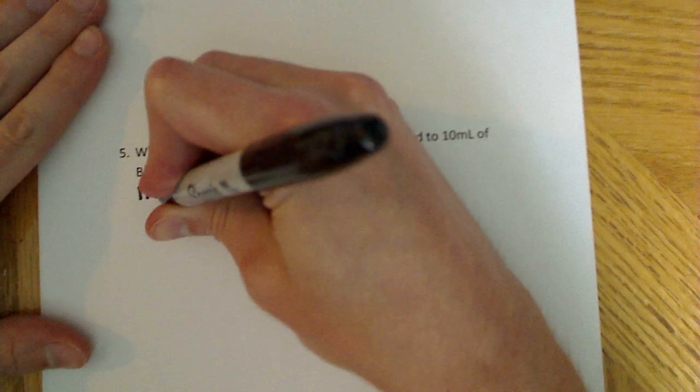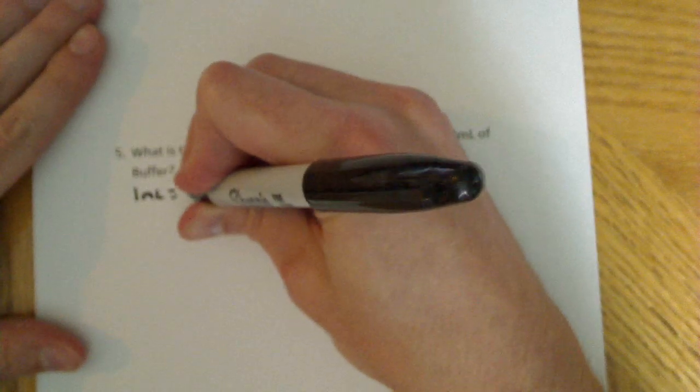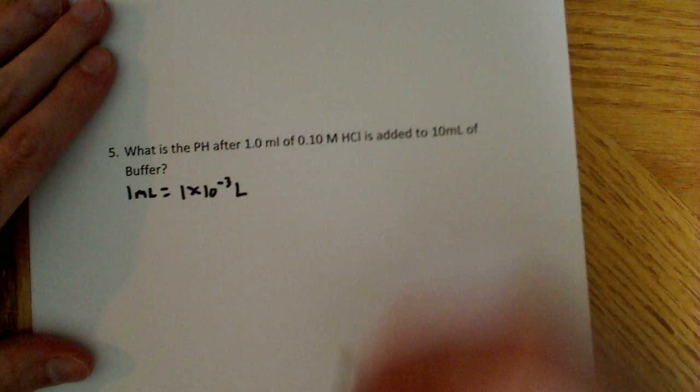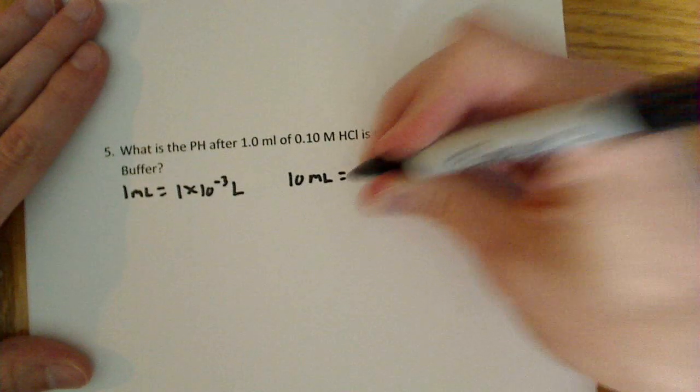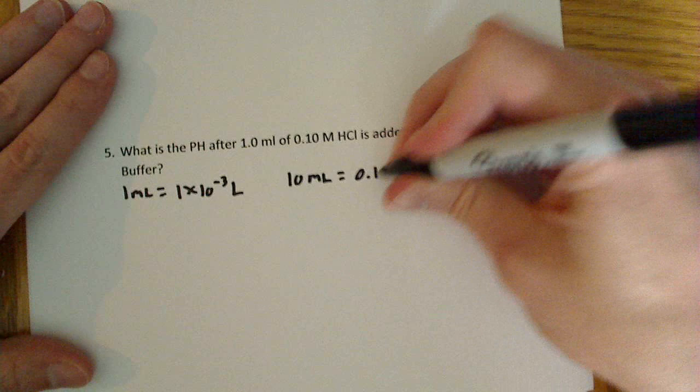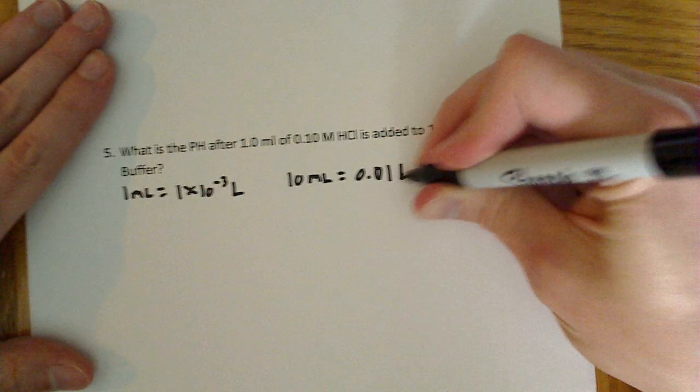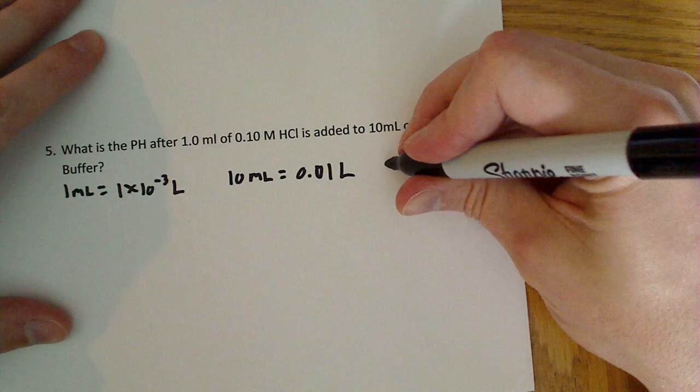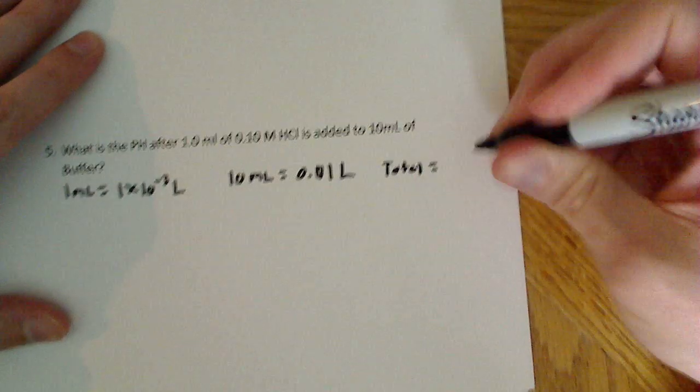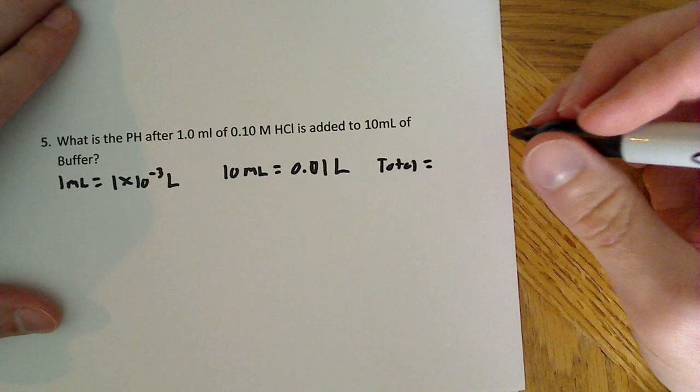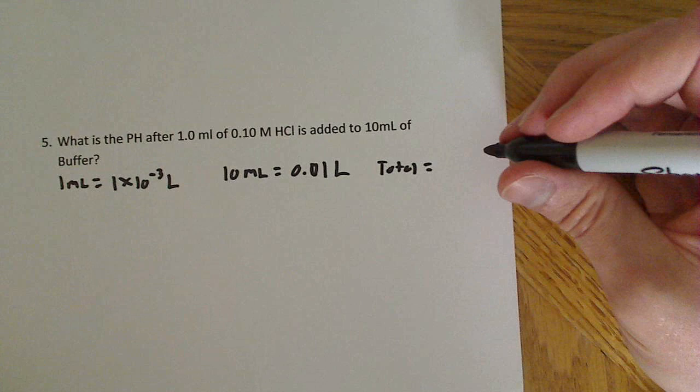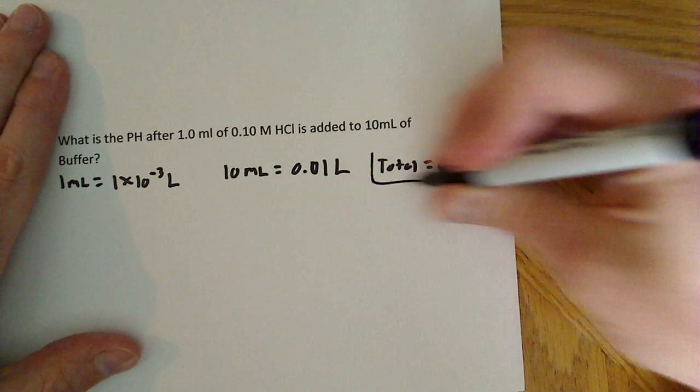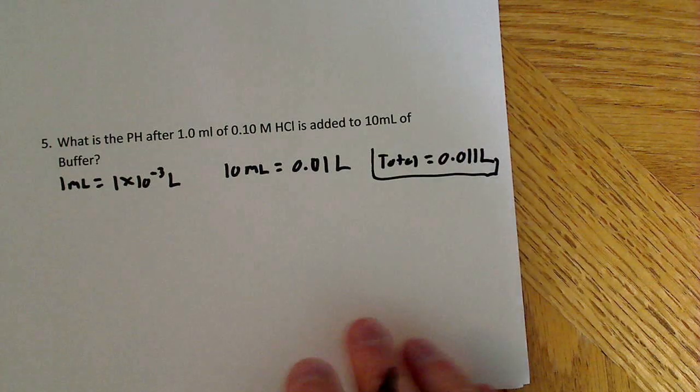So the first thing I like to do is convert everything to liters. So 1 milliliter is equal to 1 times 10 to the negative third liters. And we know that 10 milliliters is equal to 0.01 liters. And the total number of liters that we have for this problem is 0.011. And that's going to be important in a second.